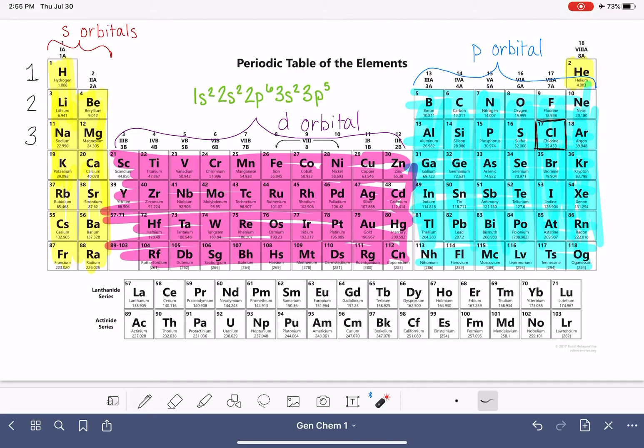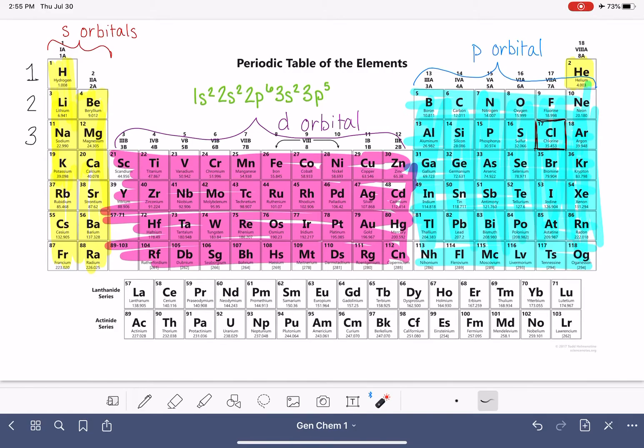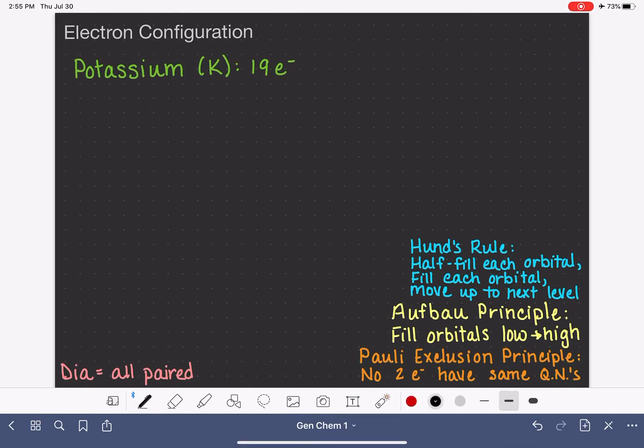Sometimes it takes a couple times of seeing how that works before it kind of sinks in. So without giving a further explanation, let's just move on to another example. Our next example is potassium. Potassium has 19 electrons. We're going to go back to what we know, our energy diagram first. We have 2p, and then we have 3s, and then we have the 3p, and then after that we have the 4s.